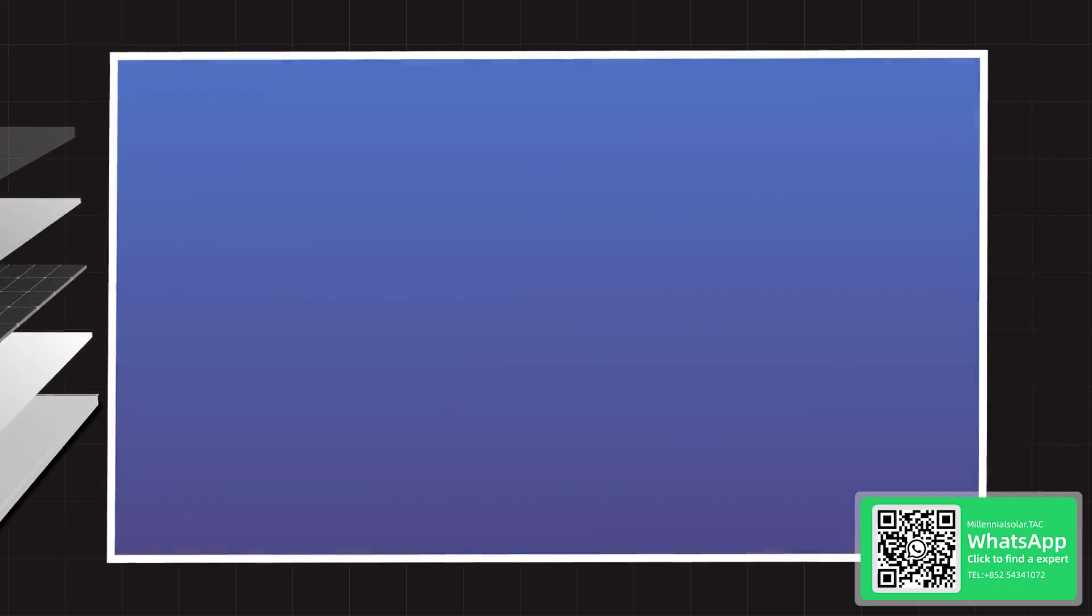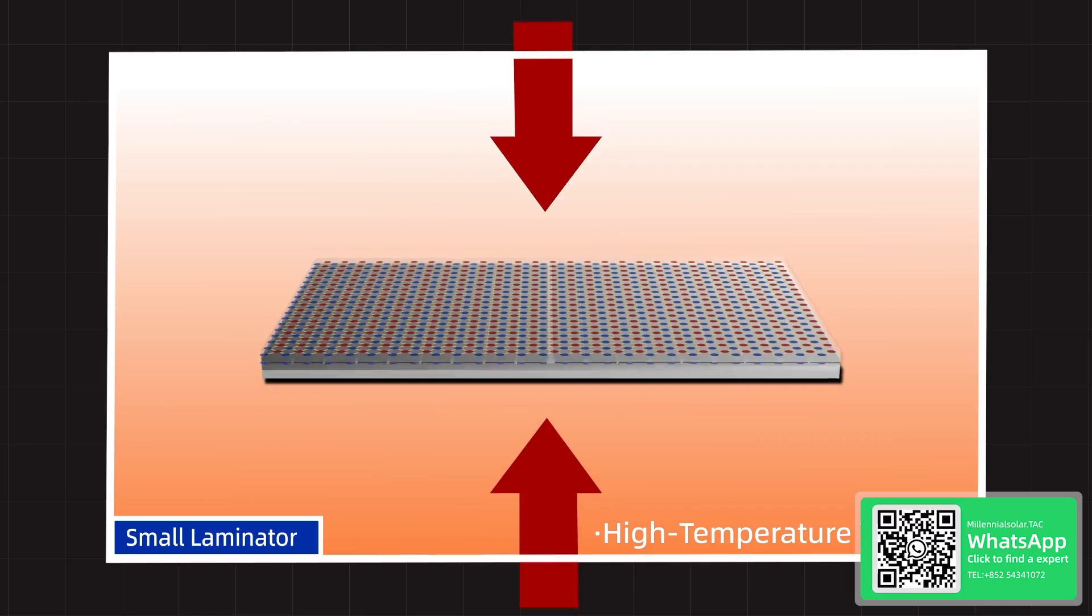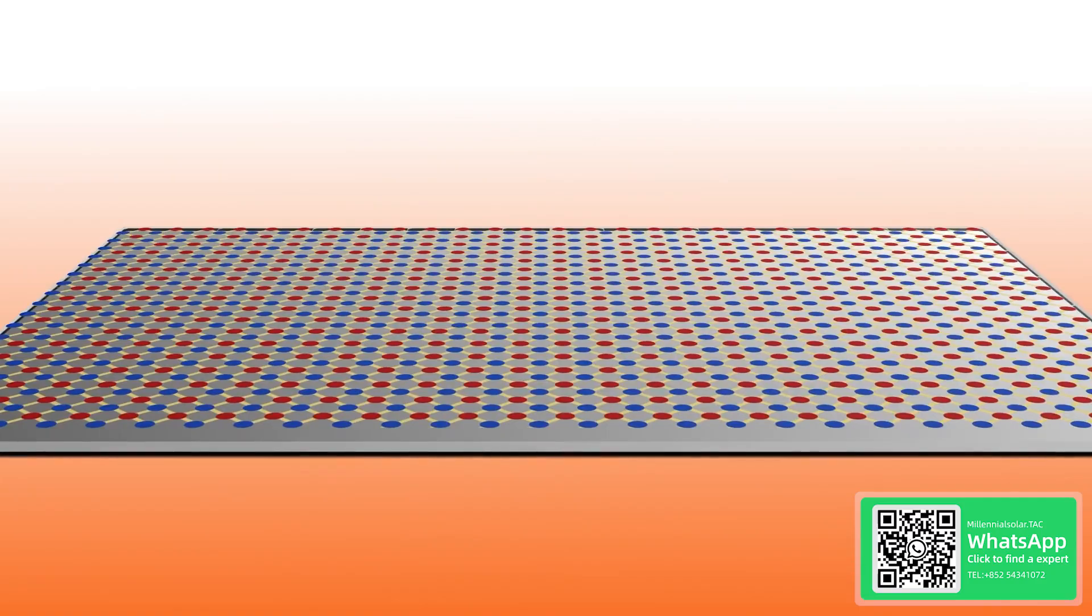During the lamination process, EVA undergoes a cross-linking reaction, forming a three-dimensional network structure that tightly bonds the layered materials together and provides stable adhesion and cushioning.